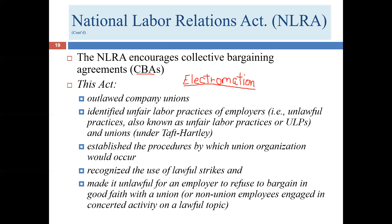The NLRA also identifies unfair labor practices that employers can engage in — prohibited under the Wagner Act — and then unfair labor practices of unions, identified under the Taft-Hartley Act in the 1940s. The Act also establishes the procedures by which union organization can occur — that whole election paradigm we'll get into in later presentations. It addressed what types of strikes are lawful and what types are not, and made clear that employers cannot refuse to bargain in good faith with the union. The collective bargaining process requires that both the union and the employer bargain in good faith; refusing to do so is a violation of the NLRA.